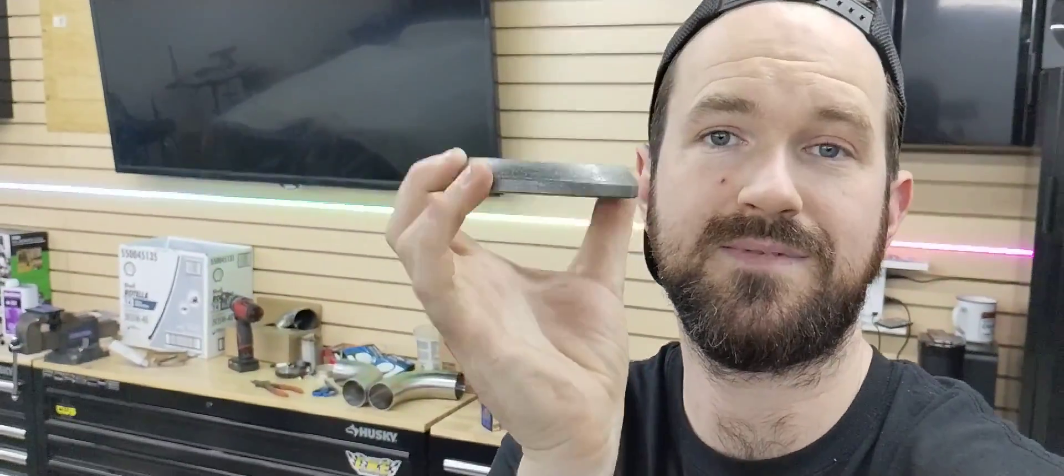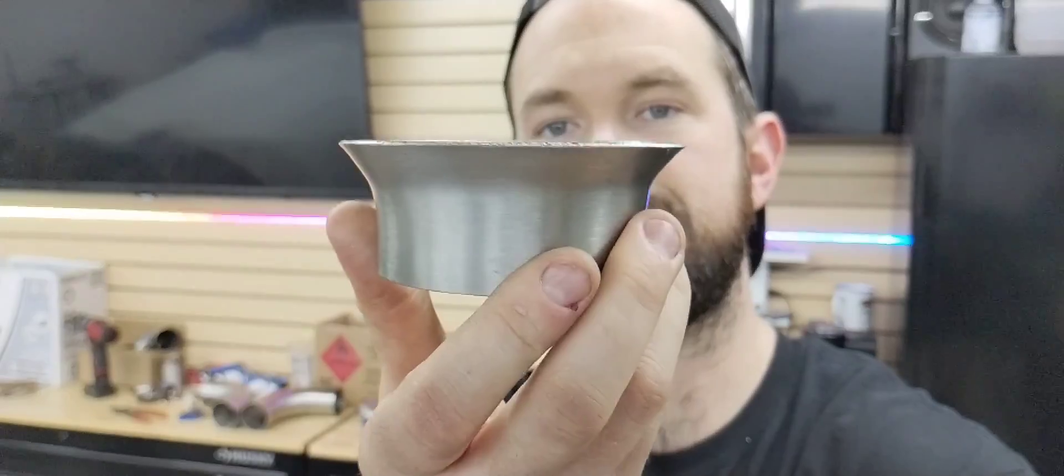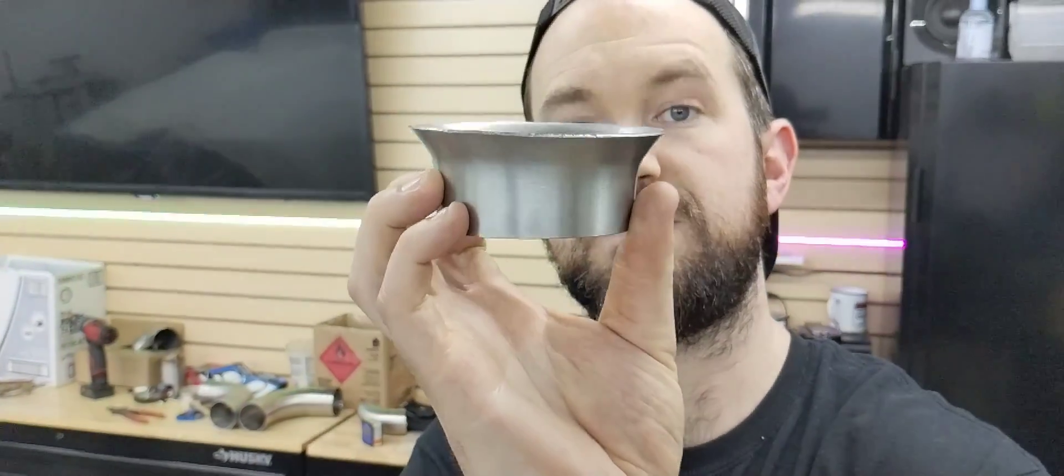That brings me to today's video and how to make a flare to seal up a donut gasket like this. So this is a gasket that comes off a manifold or a header. There's a flat flange on this side and then there's obviously the angled flare on this side. So you need a tube that's flared like this. Obviously this one is not very good.